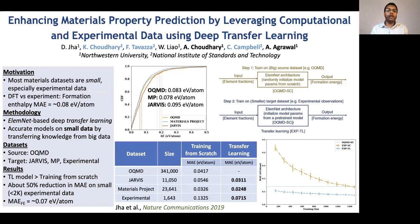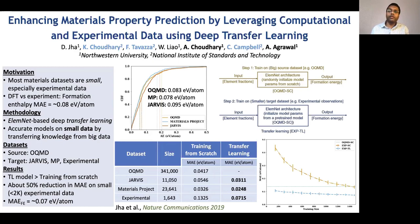The next highlight is an example of NIST collaboration, with NIST PIs highlighted in blue. The goal here is how to enable accurate models on small data, which is a much more common scenario in materials science, especially for experimental databases. Here we use the idea of deep transfer learning — specifically LMNET-based deep transfer learning. We developed LMNET a couple of years ago, where we used deep learning to learn the chemistry of materials without any domain knowledge — no periodic table information, just raw fractions.